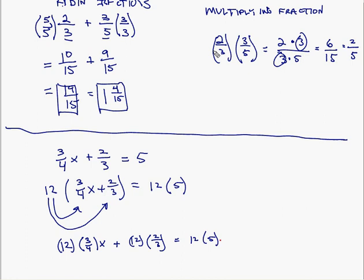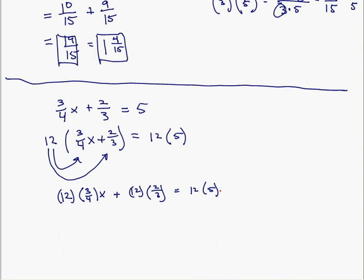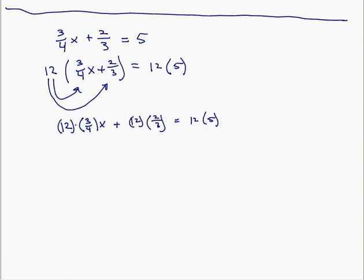Now it's a matter of simplifying. Twelve times three-fourths: if I divide twelve into four equal parts, each part is three, and three of those is nine. So this becomes nine x. Then two-thirds of twelve: dividing twelve into three equal parts gives four, and two of those is eight. So we have nine x plus eight equals sixty. By multiplying both sides by the common denominator, we've rewritten the equation with no fractions, and now we can solve it as before.